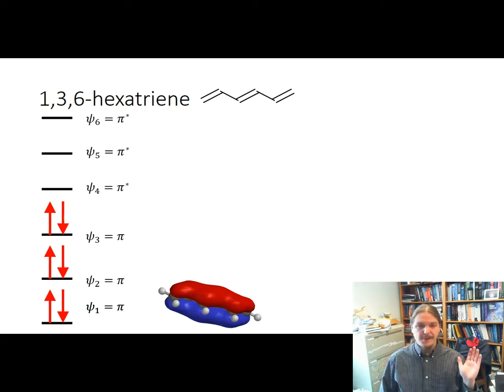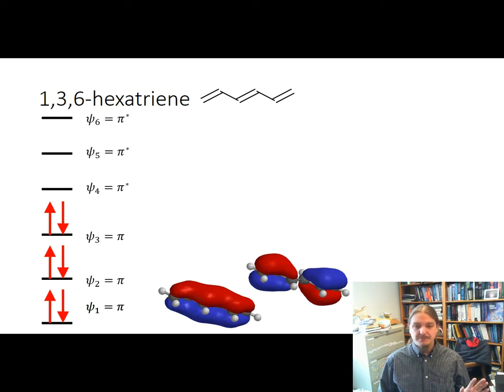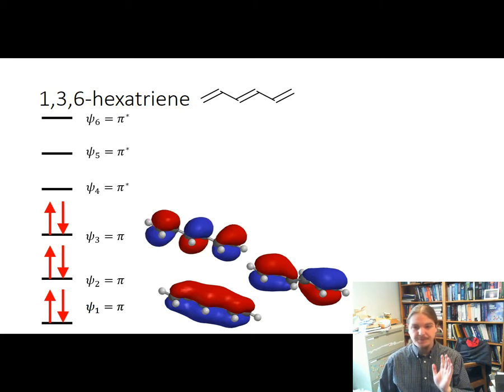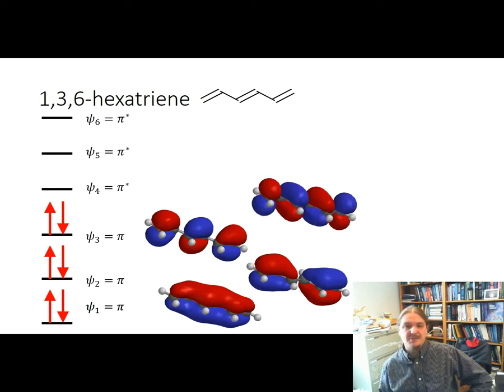Second bonding orbital has a node in the middle of the molecule. Next bonding orbital, this is the highest energy bonding orbital. Looks actually like three individual pi bonds, but again, this is one molecular orbital. So you don't let yourself think there's three bonds here in that picture.